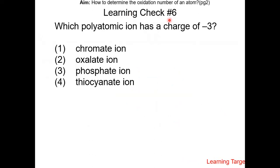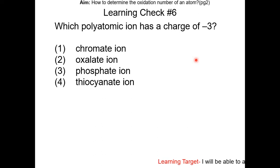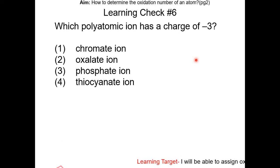Learning check number six: which polyatomic ion has a charge of negative three? By looking at Table E in your reference table, the answer is choice three — the phosphate ion.